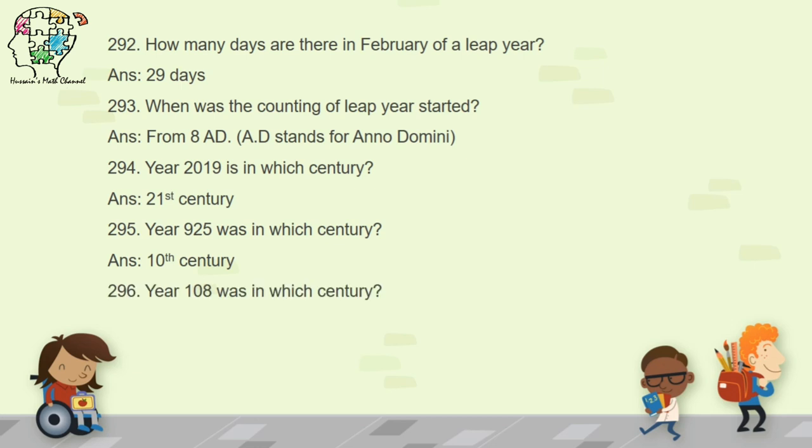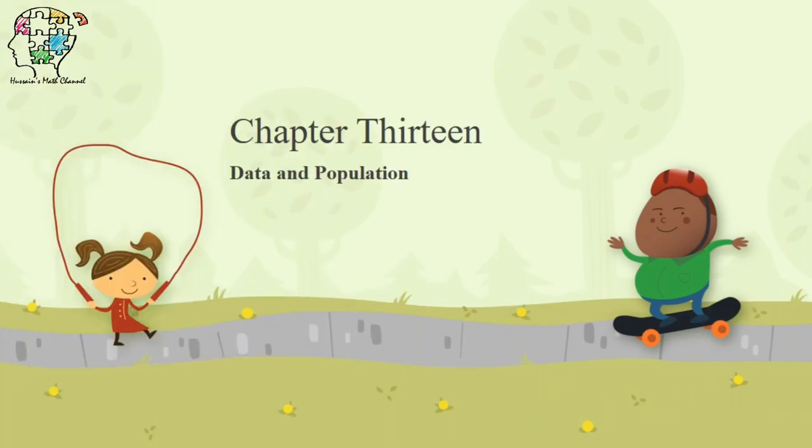This completes Chapter 12. Now we begin Chapter 13: Data and Population. Question 297: how many types of data are there? In our book, two types of data are given — organized and unorganized.